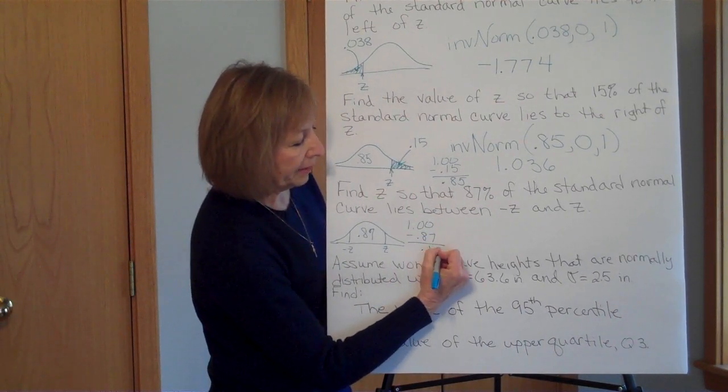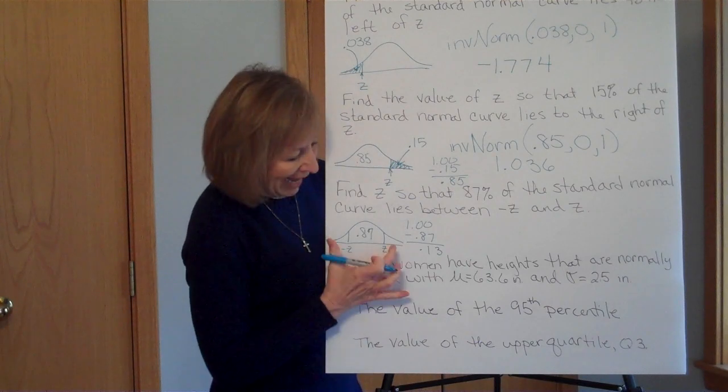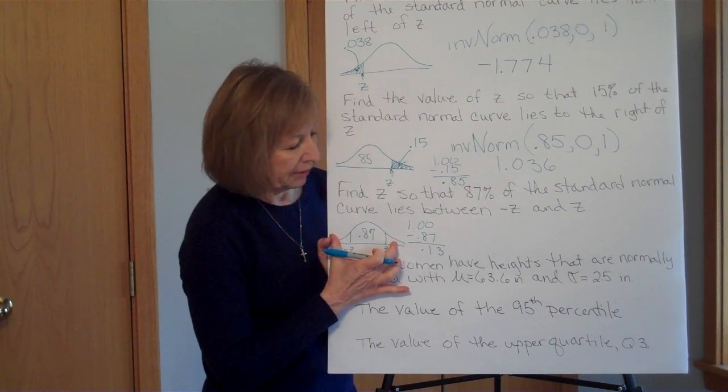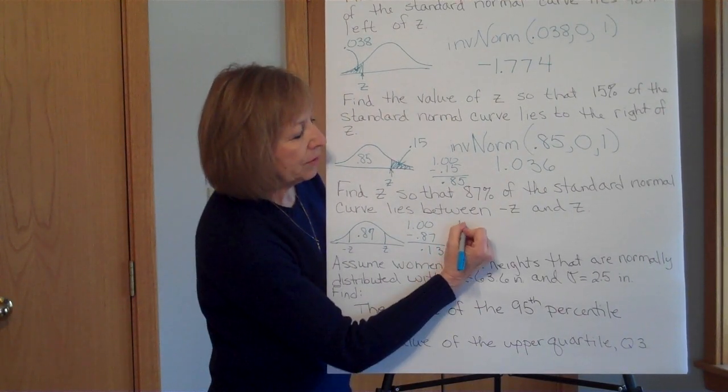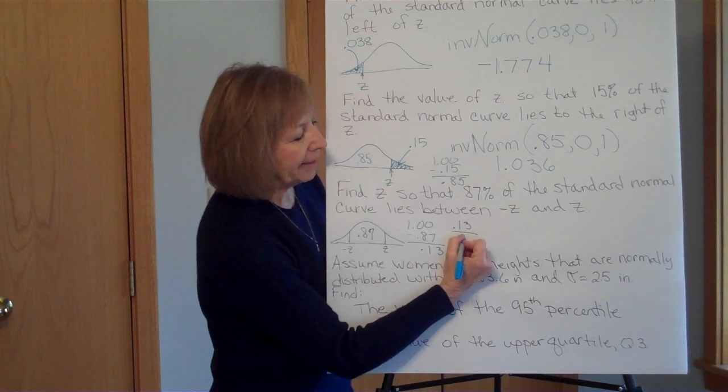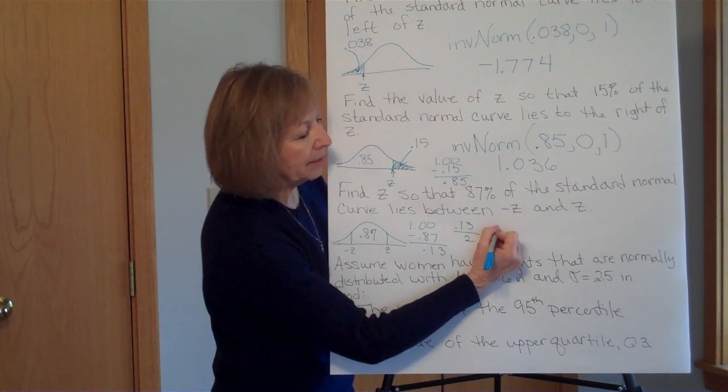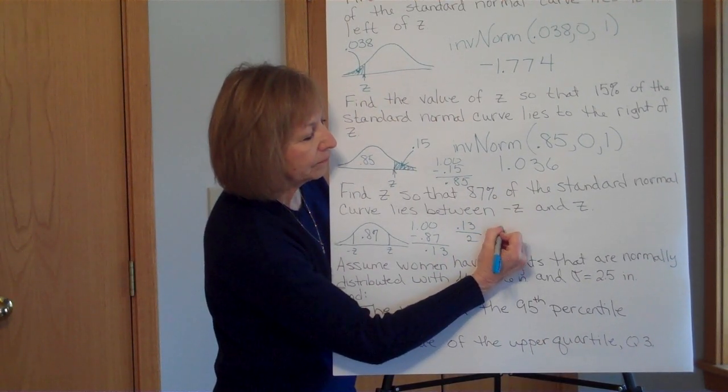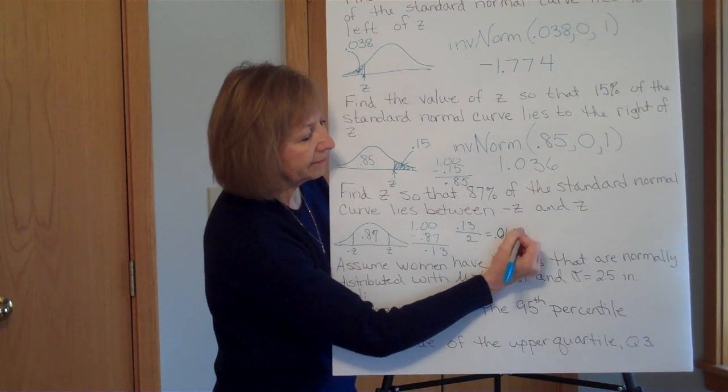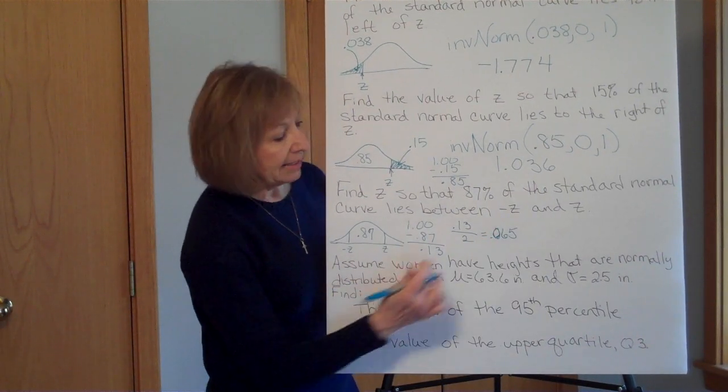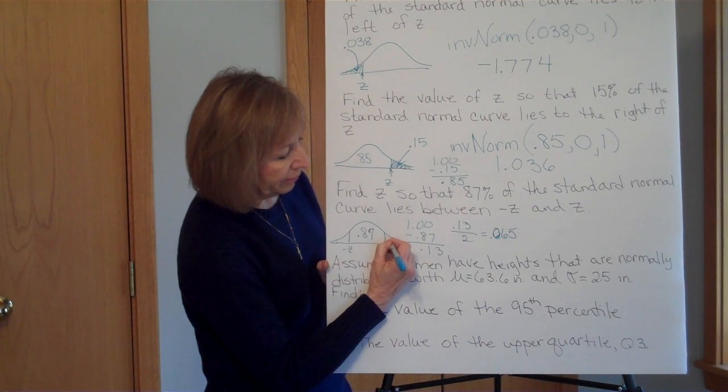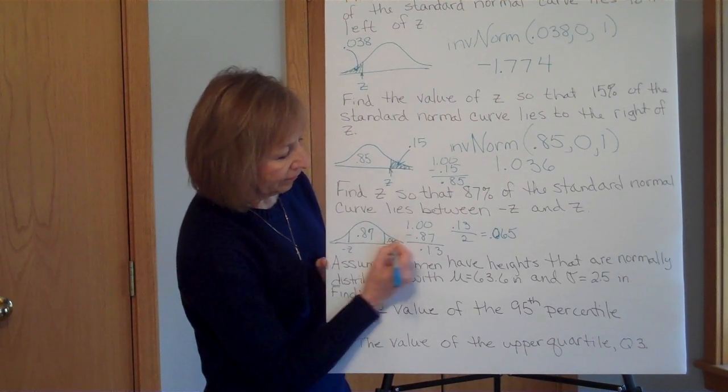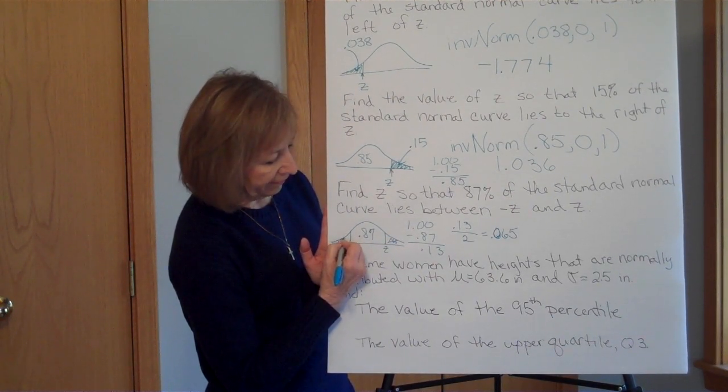But that's got to be shared between these two portions. So I'm going to take 0.13 and divide that by 2, and I get 0.065. Okay, now there's a 0.065 here and a 0.065 here.